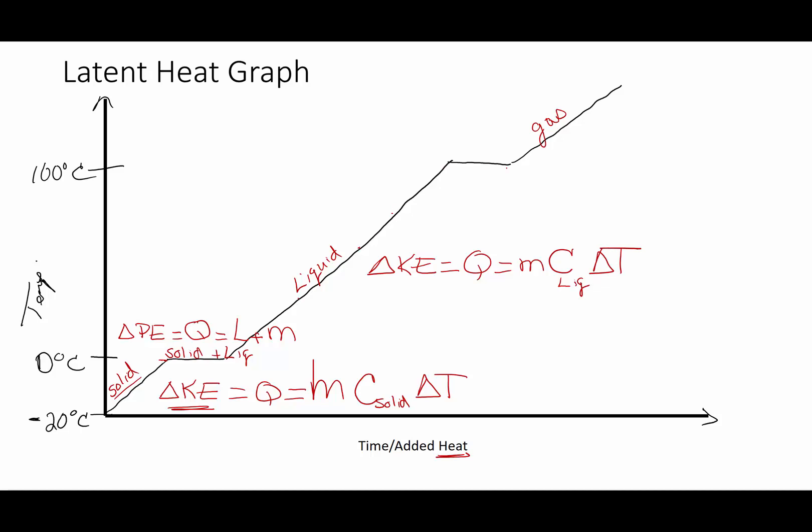The next flat portion up here, it's a change in potential energy. And it would be latent heat of vaporization times mass. And we would have at this portion a mixture of liquid plus gas. And in the last upward portion, again temperature is going up. And so we're going to have a change in kinetic energy. And the heat necessary to do that would be mass, specific heat of the vapor or the gas, and the change in temperature we're talking about.